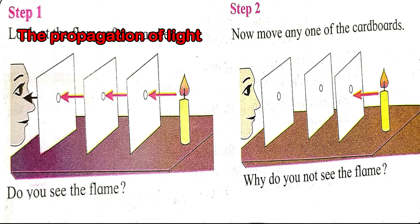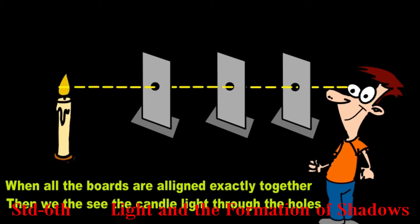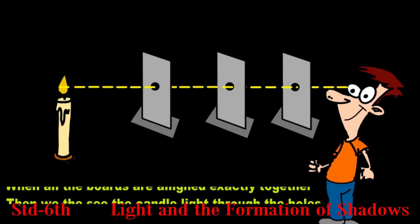Propagation of Light: Light travels in a straight line. This is known as linear propagation of light.